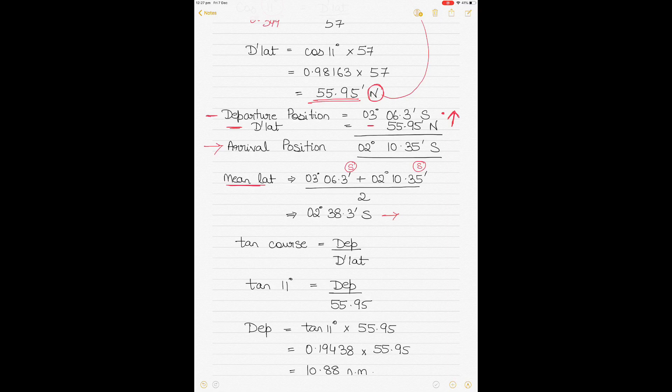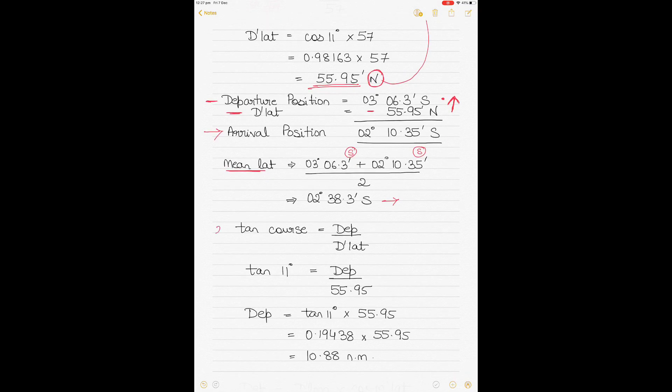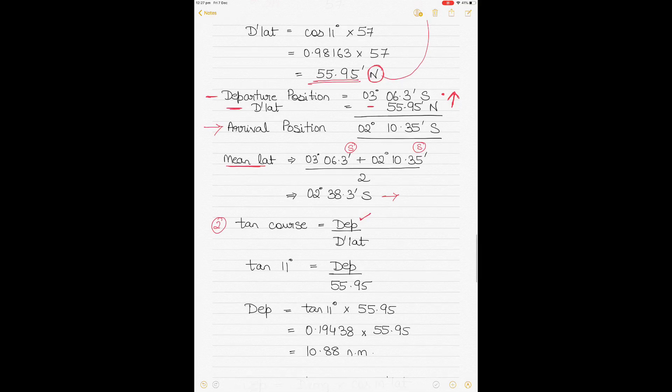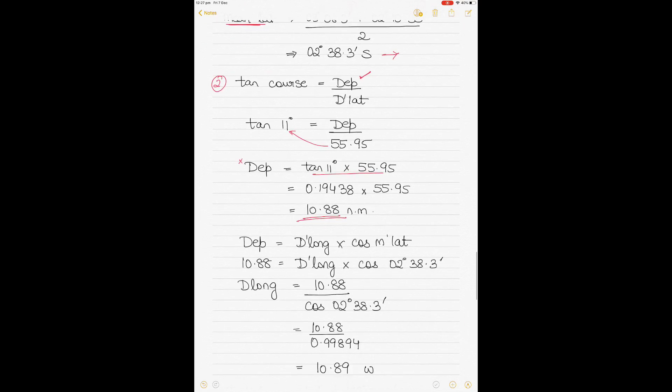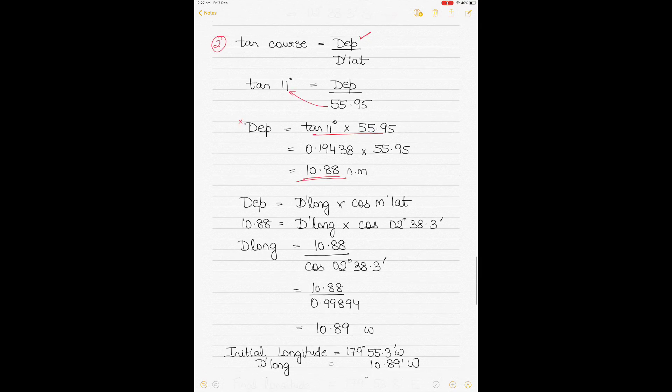Let's take another formula and calculate the rest of the figures. The next is tan(course) equals departure by d lat. We need to calculate departure to calculate our d long further. If you put in the values, tan(11°) will equal departure divided by d lat. Keep departure on one side, take the knowns to the other side. Putting the values in the calculator, the answer you should get is 10.88 nautical miles because departure is a unit of distance. You may make it 10.9 if you want, but I'm keeping it to two decimal places.